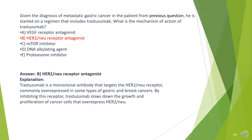The answer is B. HER2/neu receptor antagonist. Trastuzumab is a monoclonal antibody that targets the HER2/neu receptor, commonly overexpressed in some types of gastric and breast cancers. By inhibiting this receptor, trastuzumab slows down the growth and proliferation of cancer cells that overexpress HER2/neu.